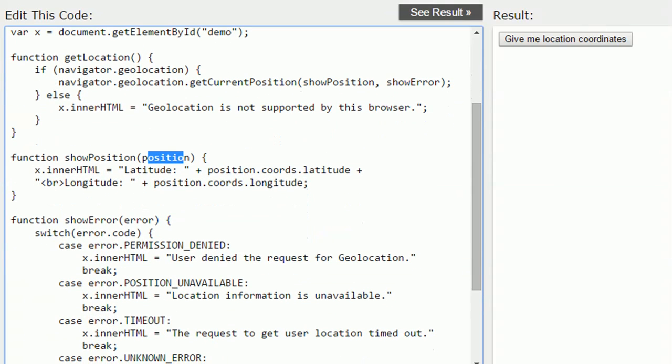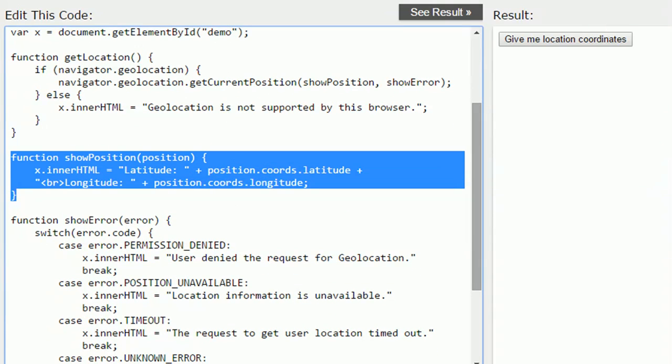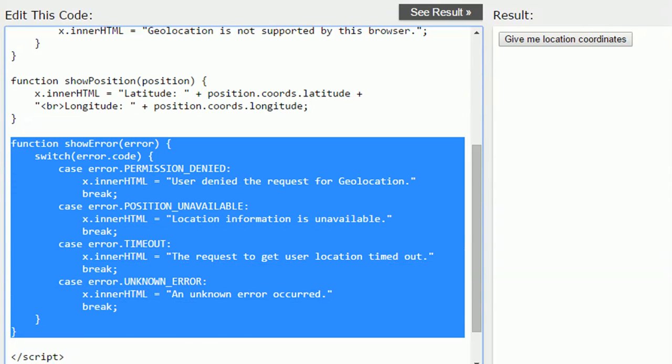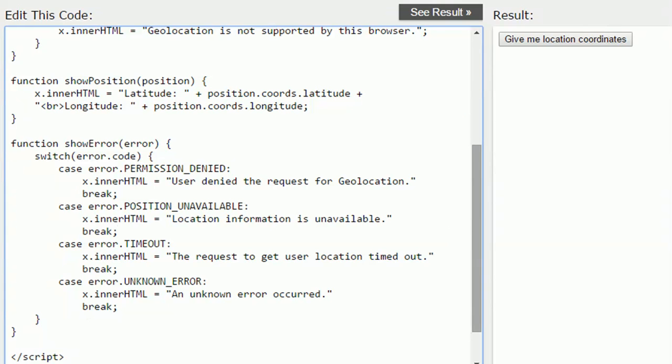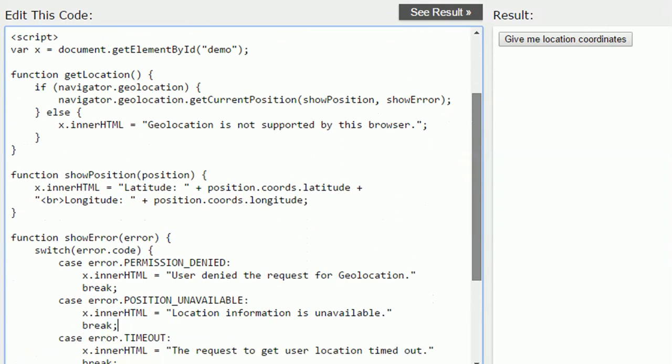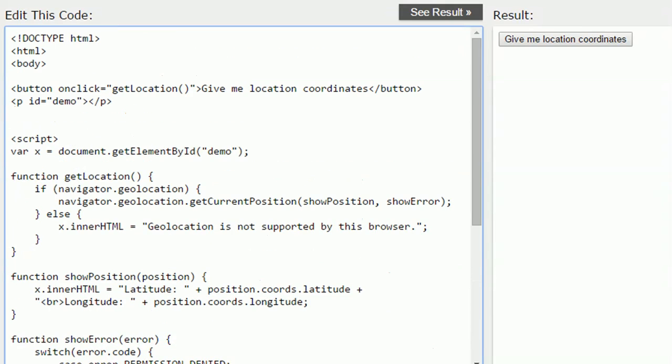showPosition is my success function where in case if I get the location properly it's going to get called. showError is in case if I get some issue. This getCurrentPosition is a blackbox function which internally uses my location service to find out the location of my device. You see that as soon as I click on the button it's returning me the proper values.